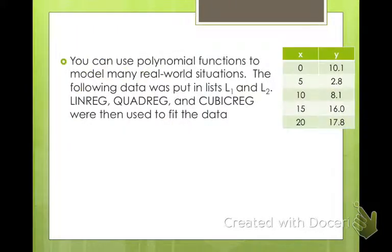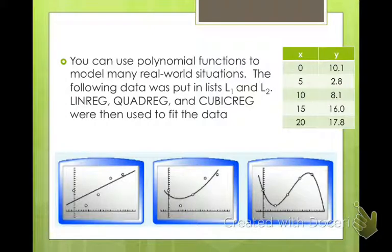We can use polynomial functions to model real world situations where we take a table of data — x values and y values — put them into List 1 and List 2 under our stats feature, and then find a linear regression, a quadratic regression, and a cubic regression. There's the linear regression that fits the data, the quadratic regression in the middle, and the cubic regression on the right.